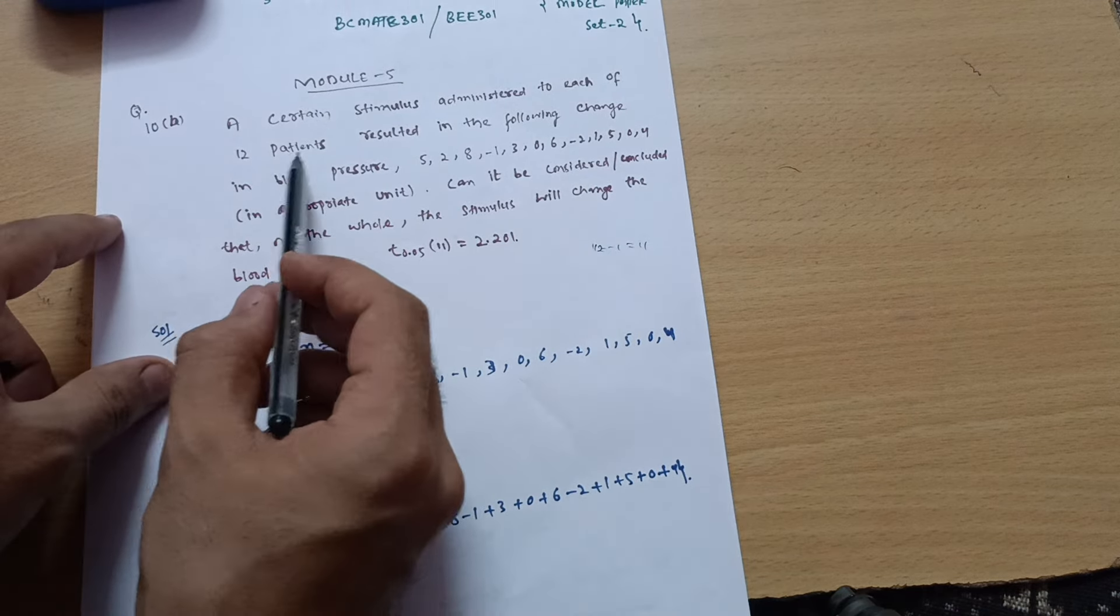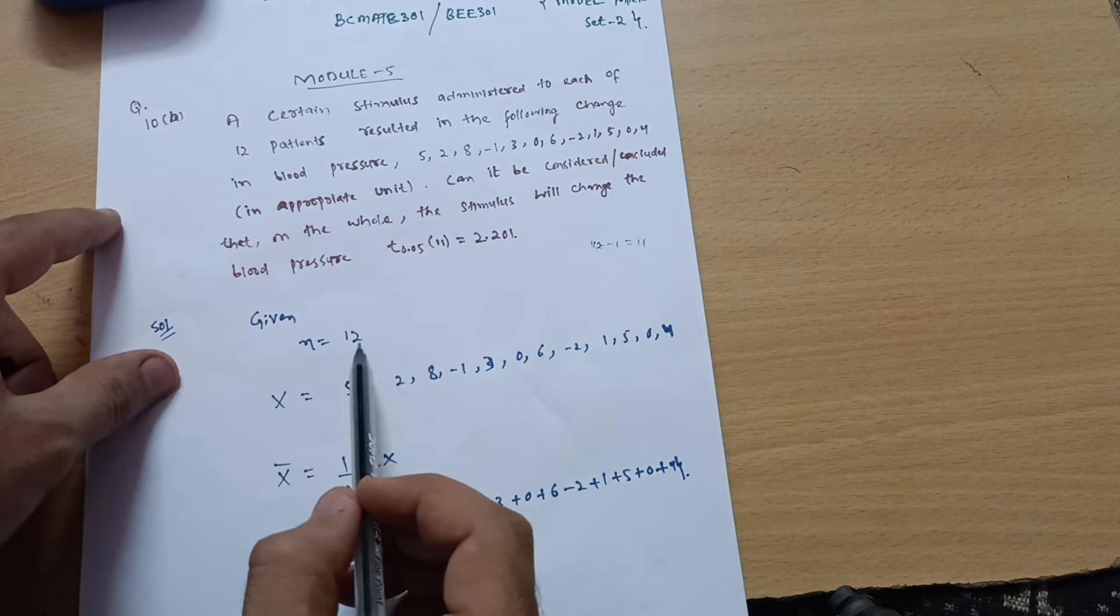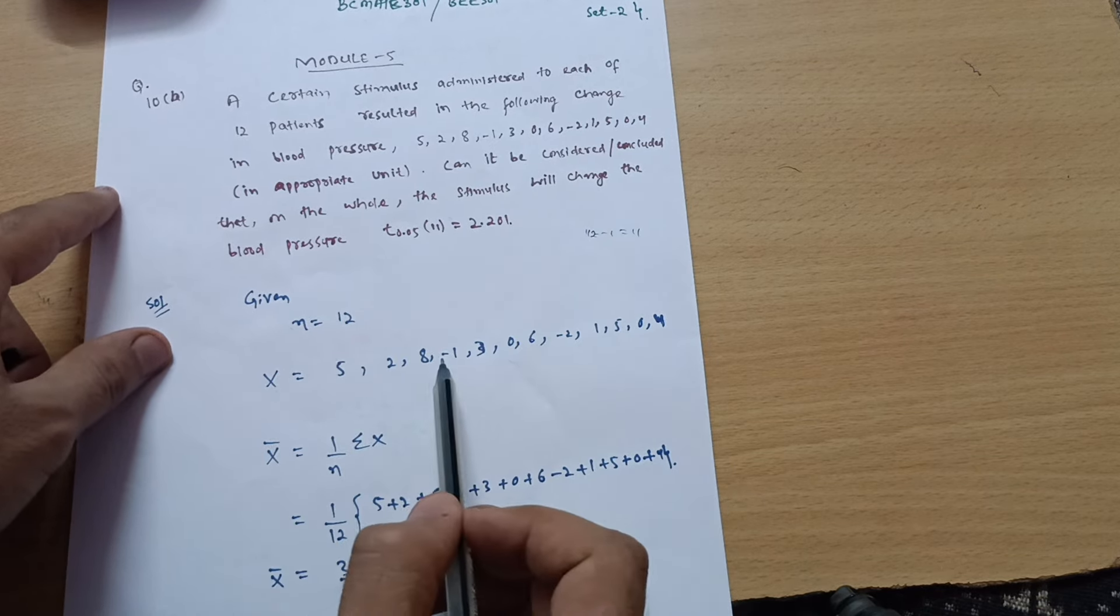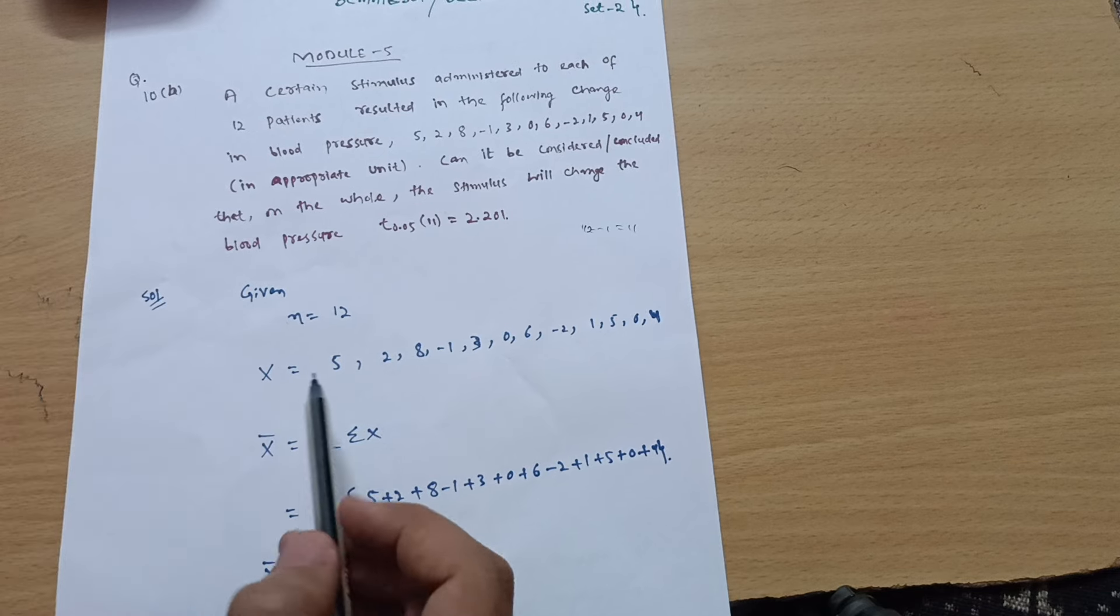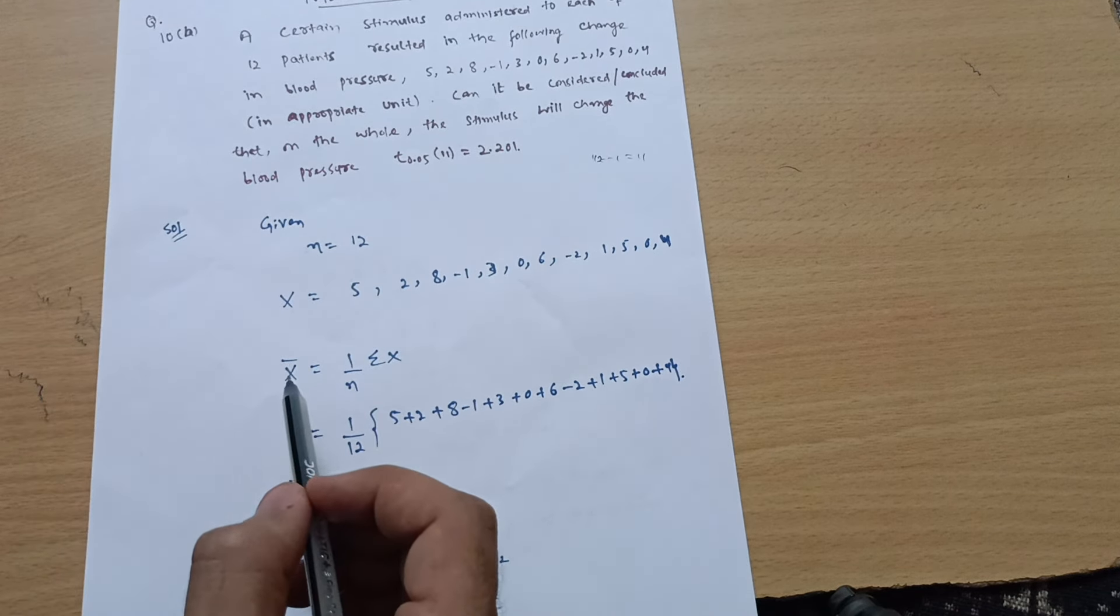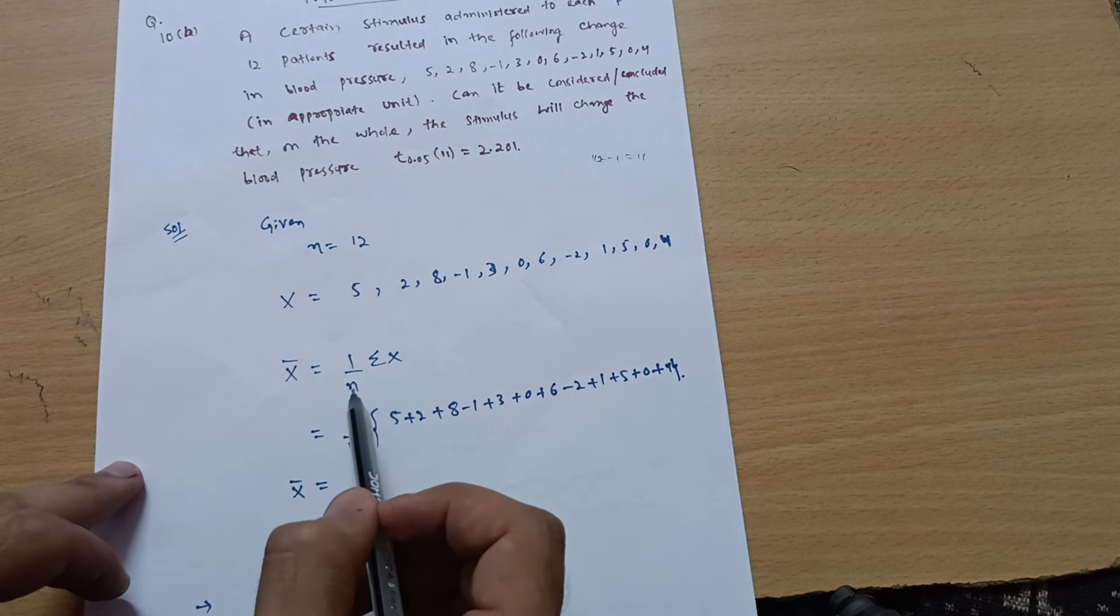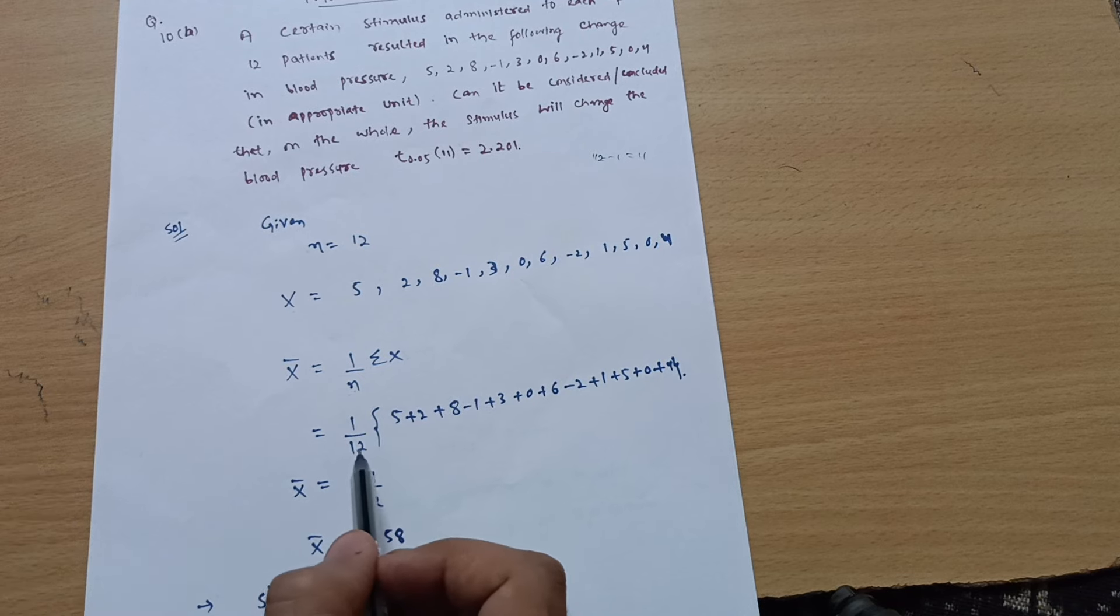So, write down the first given data. What is the sample size? That is 12 patients. n is equal to 12. Let me call this data as x over here: 5, 2, 8, -1, 3. This is x over here now.